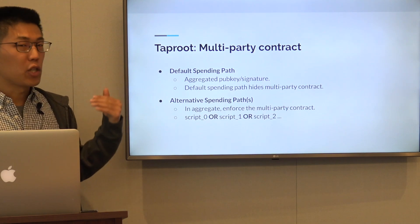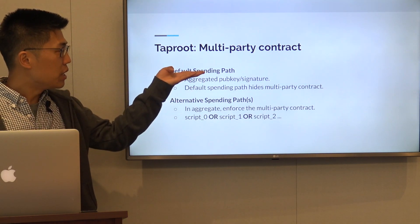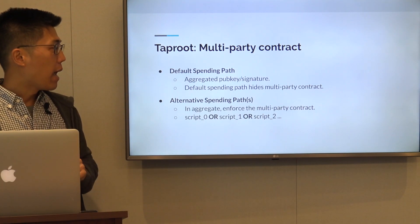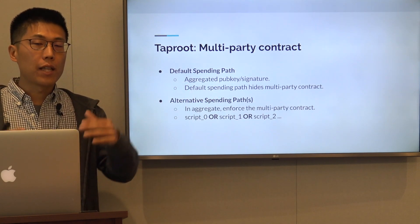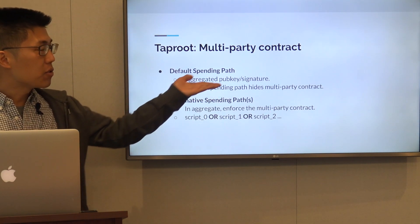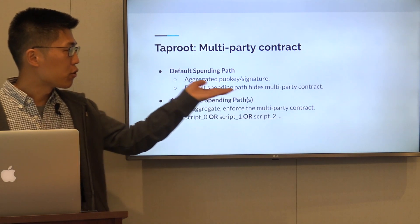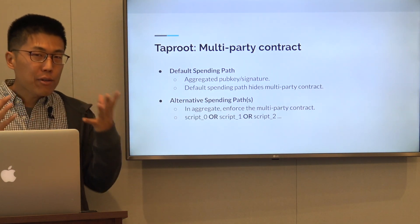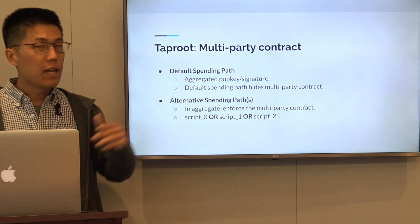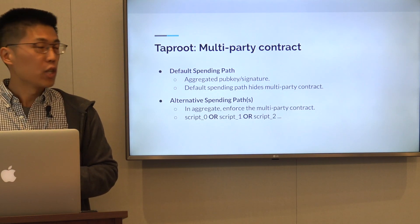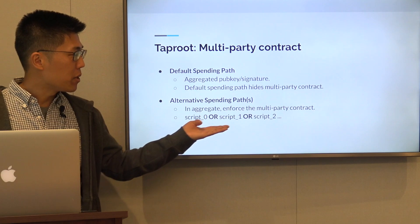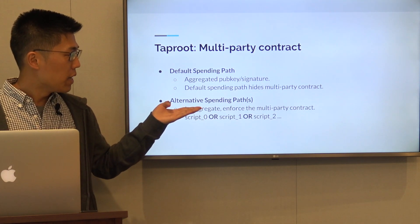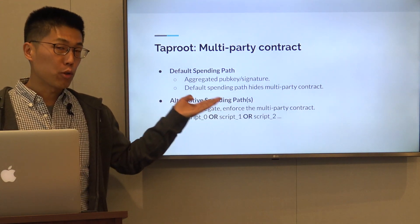Taproot makes a lot of sense especially for multi-party contracts. The default spending path, as we said, is just an aggregated public key. It is done collaboratively with all parties, and it allows us to hide the actual multi-party contract that's hidden in alternative spending paths. Those alternative spending paths in aggregate encode the multi-party contract that all participants agree to. You can consider the individual scripts committed to a Taproot output to have an OR condition, so we can have multiple individual scripts which are all alternative spending script paths.